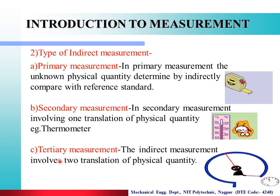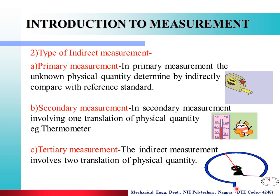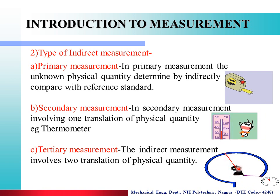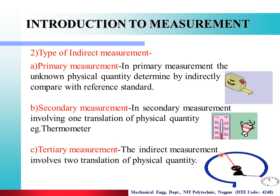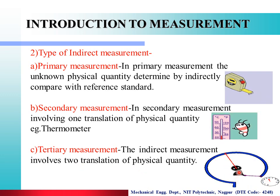The next type is tertiary measurement — indirect measurement involving two translations of a physical quantity. For example, pressure causes a mechanical displacement, and that linear displacement is then further converted. Because of two translations, it is called tertiary measurement.